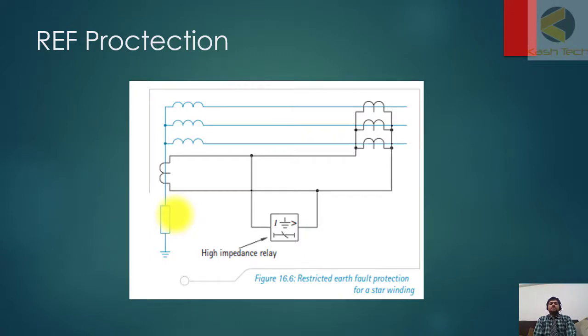This is the example of REF protection. If you have differential protection, then why do you need REF protection? Because in differential protection there is a slope of 20 to 30 percent, and any fault which is coming inside the slope, differential relay cannot operate.